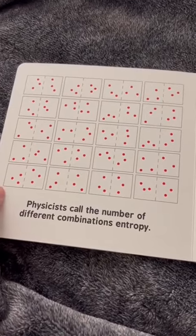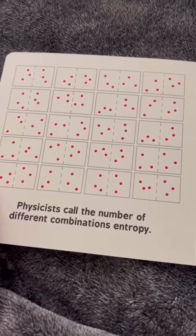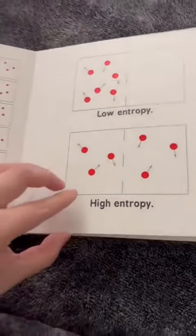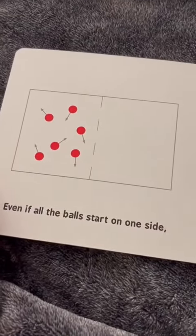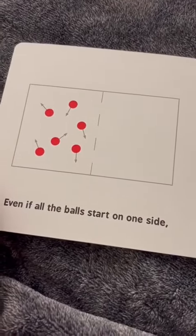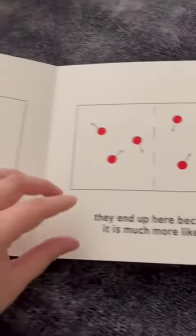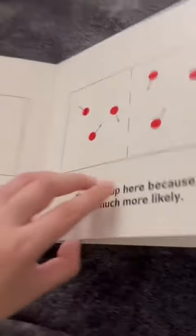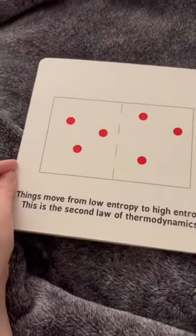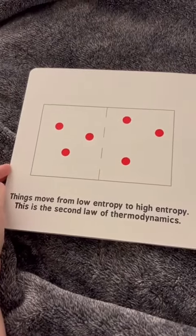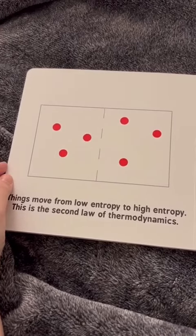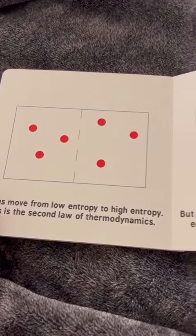Physicists call the number of different combinations entropy — low entropy and high entropy. Even if all the balls start on one side, they end up here because it is much more likely. Things move from low entropy to high entropy. This is the second law of thermodynamics.